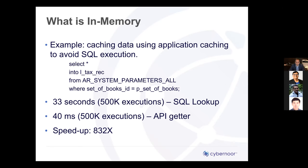As a simple example: prior to Oracle Database InMemory, applications went to extreme lengths to do their own form of caching. When the tax engine is called for every tax line processed, it has to fetch setup information from the AR system parameters table. Using raw SQL, 500,000 lookups took about 33 seconds. If that data is cached in memory using a PL/SQL collection — an in-memory table — it reduces to 40 milliseconds, over an 800x improvement. That is the type of improvement you typically expect when moving from raw SQL processing to storing data in memory.